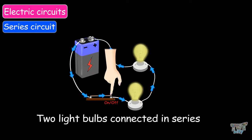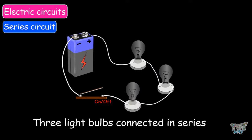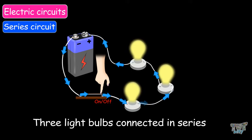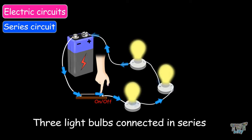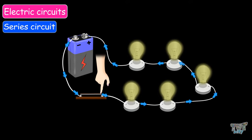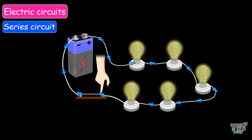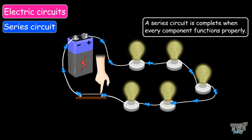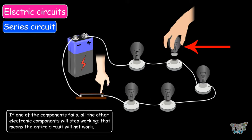Here we have two light bulbs connected in series, and here we have three light bulbs connected in series. If the light bulbs are connected in series, the brightness of each individual bulb reduces upon adding more bulbs. In a series circuit, the same current flows through all the electrical components, regardless of what components are used. A series circuit is complete when every component functions properly. If one of the components fails, all the other electronic components will stop working, meaning the entire circuit will not work.